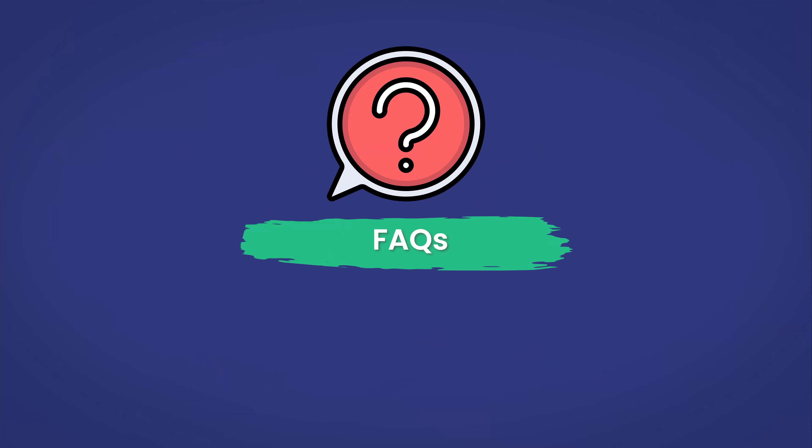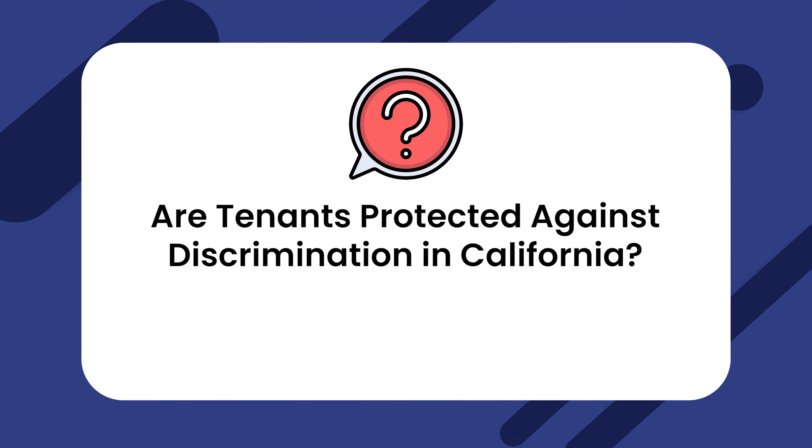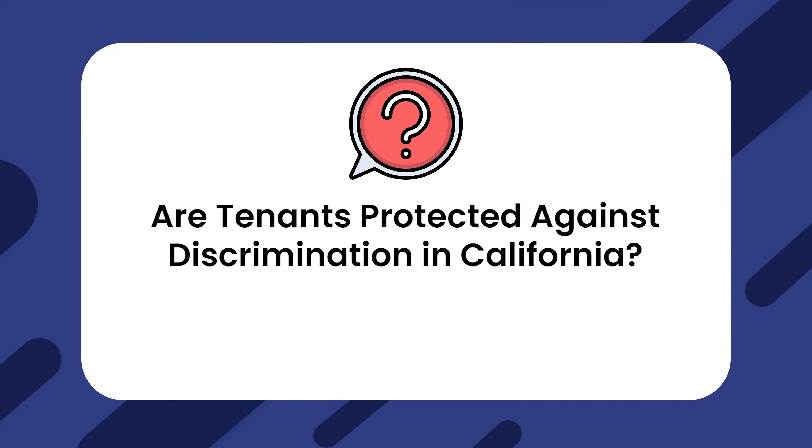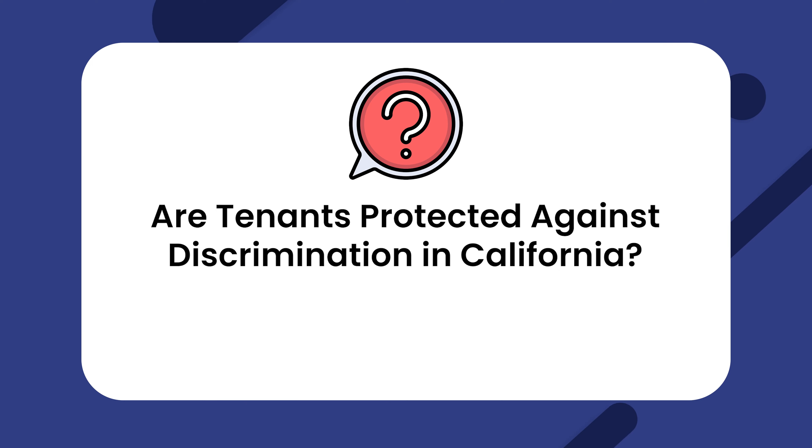Here are some frequently asked questions. Number one: are tenants protected against discrimination in California? The answer is yes. California has a Fair Housing Act, which prevents the landlord from discriminating against any tenant based on their gender, religion, race, citizenship status, and more.